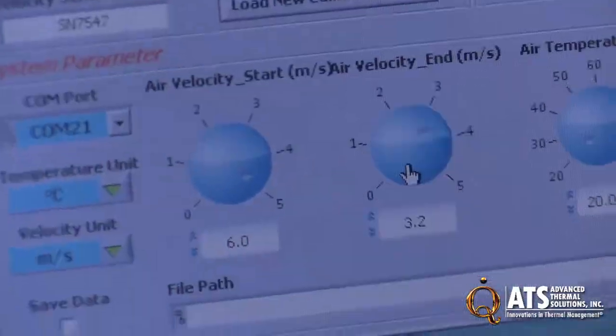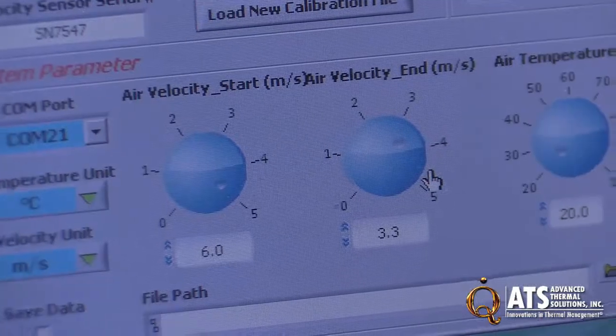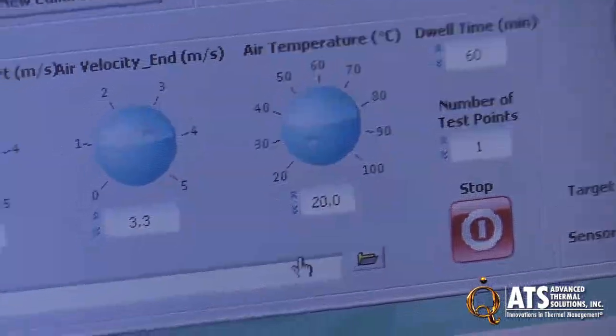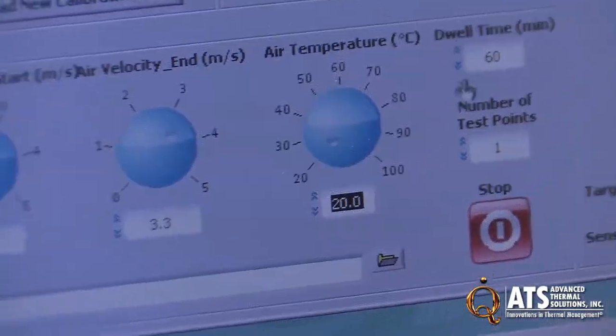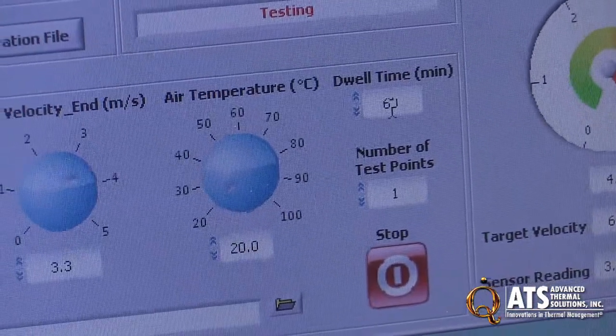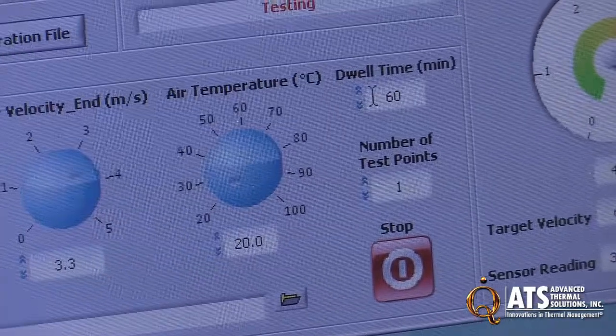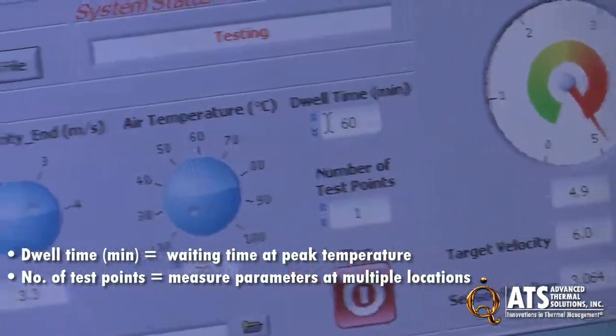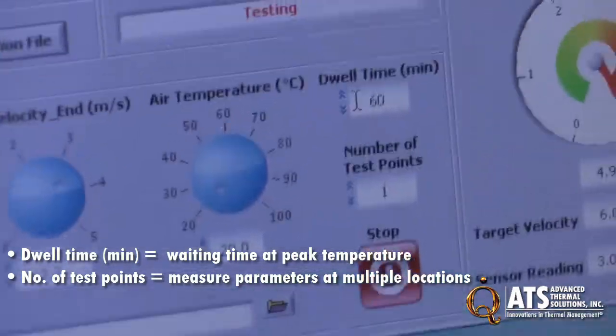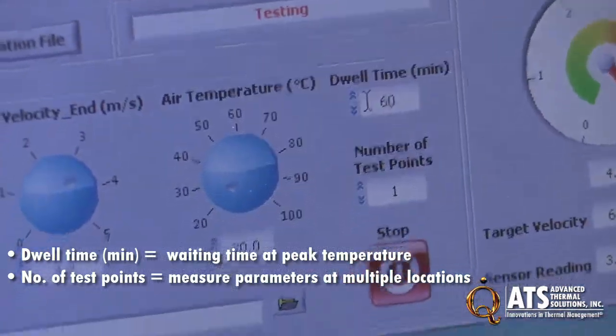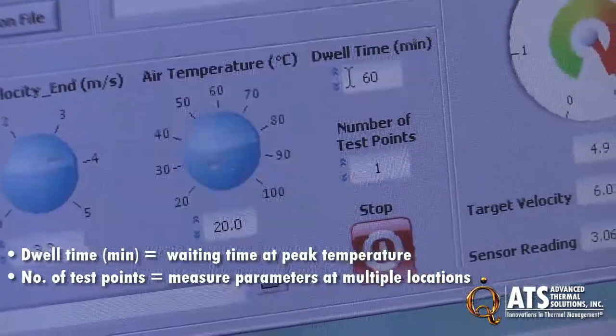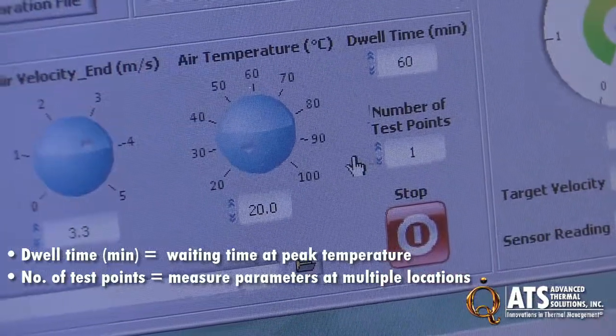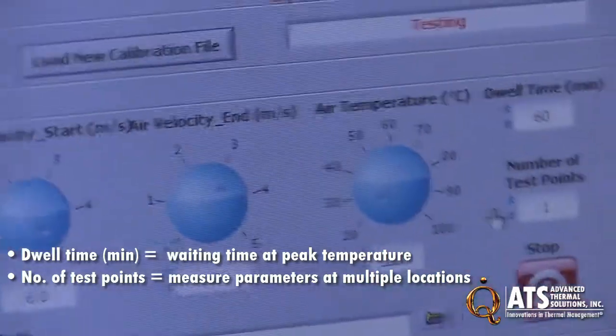In these two options here, you can set minimum velocity and maximum velocity, and you can also set the temperature of the wind tunnel here by clicking the number. In this location, you put the dwell time in minutes—the dwell time means how long you want the wind tunnel to stay at that specific velocity. For number of test points, let's say if you want to run from 2 meters per second to 5 meters per second at three different points, you just put the three points, which means 2, 3.5, and 5.